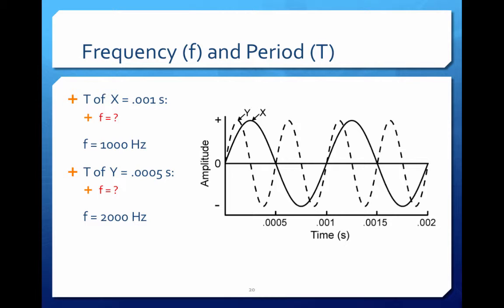The frequency for wave y is one over 0.0005 seconds. The frequency for wave y is two thousand hertz. So wave y is higher frequency than wave x. Wave y completes more cycles per second than wave x.